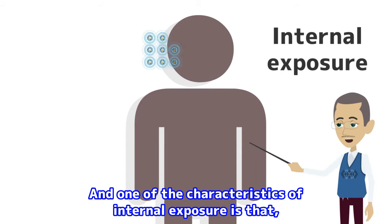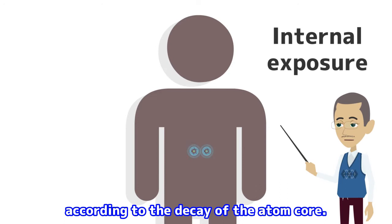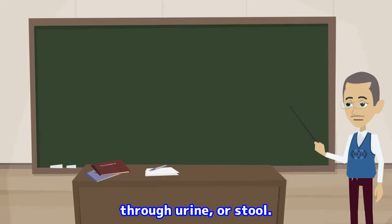One of the characteristics of internal exposure is that after the radioactive materials are taken into the body, the radioactivity decreases according to the decay of the atom core. Also, according to the metabolism inside the human body, the radioactive materials are eliminated through urine or stool.